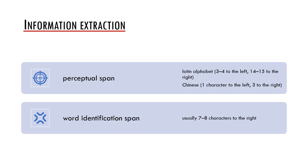What is well known is that while reading there is a difference between the so-called perceptual span and the word identification span. The perceptual span consists of three to four letters to the left of fixation and of 14 to 15 letters to the right of fixation.